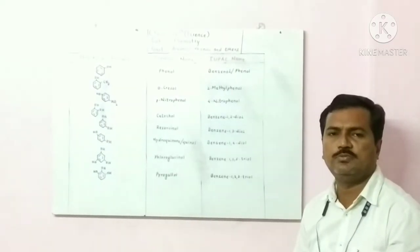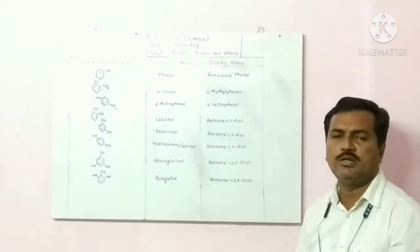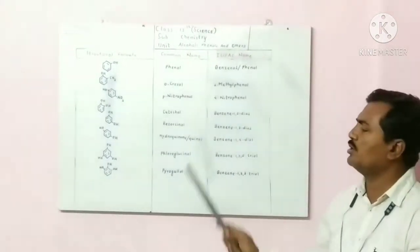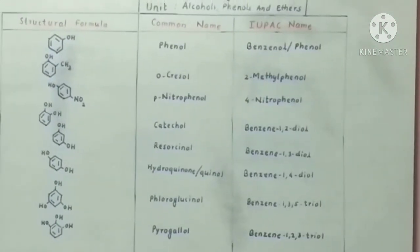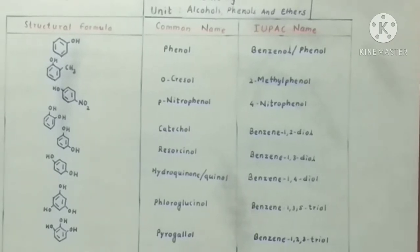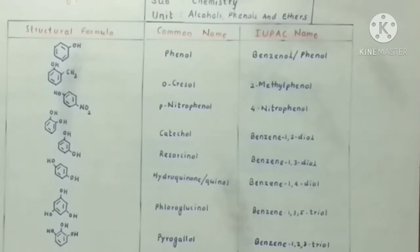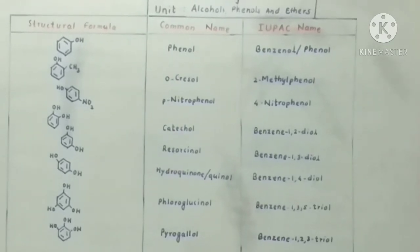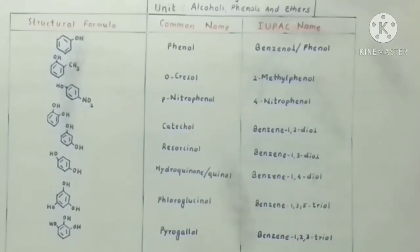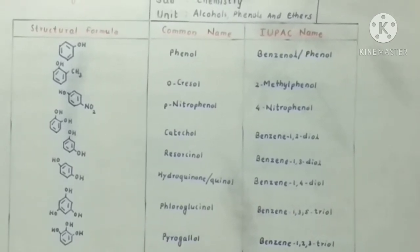Phenols are the hydroxyl derivatives of benzene. They are also known as carbolic acid. In the IUPAC system, phenols are named as benzenol or phenol. The name phenol is accepted by IUPAC, so we can write it in the IUPAC system as well as in the common system. The common name of phenol is benzenol or phenol.